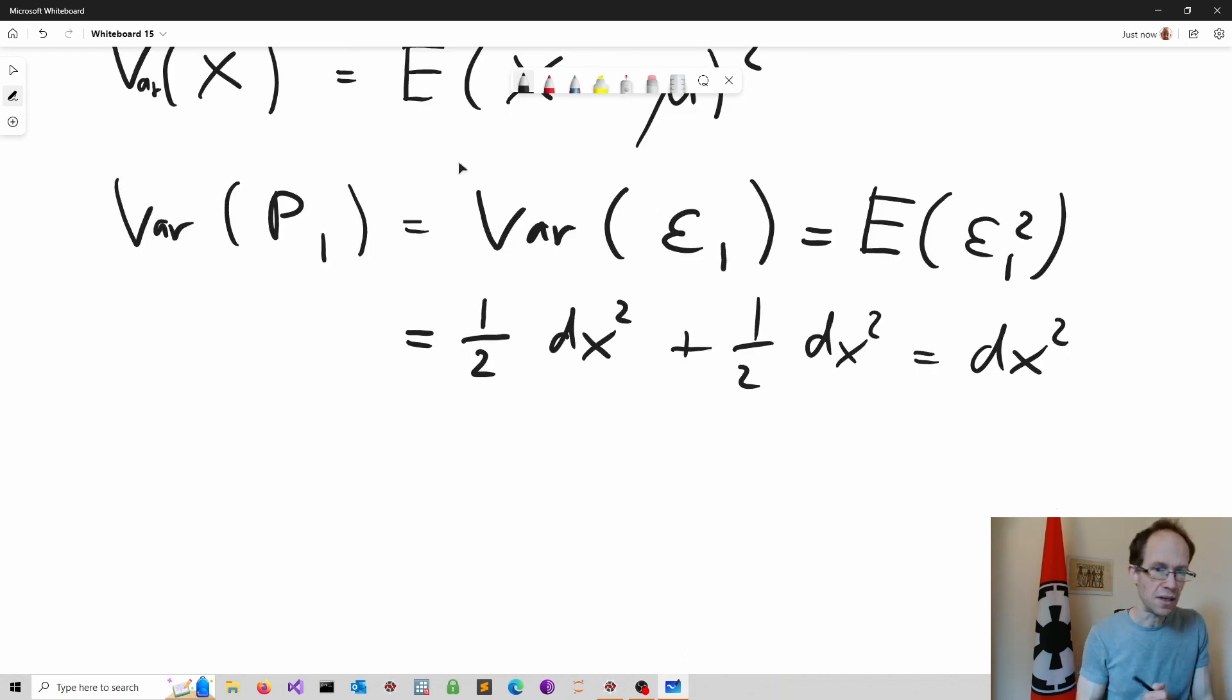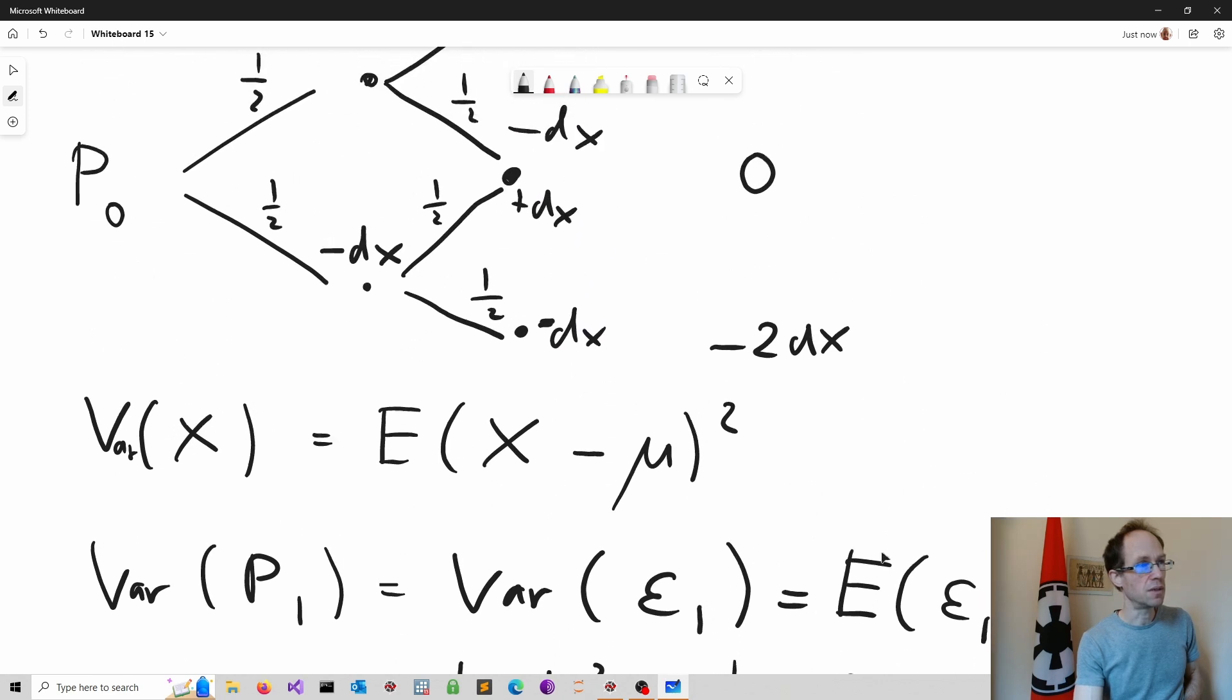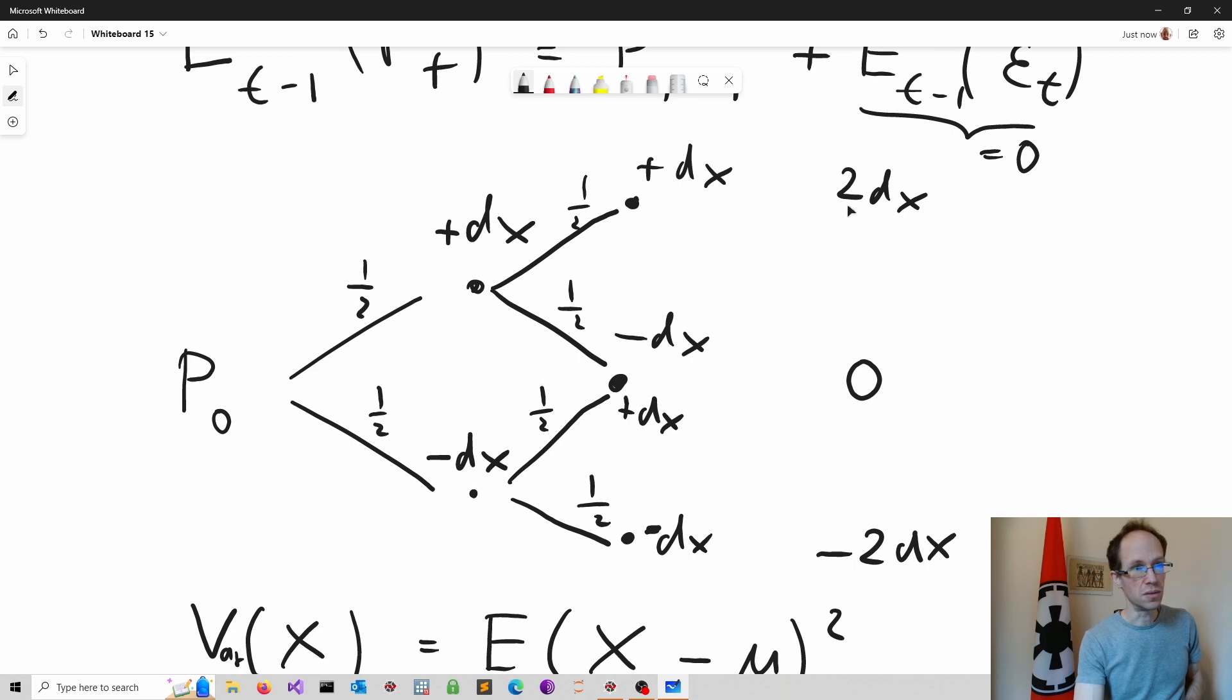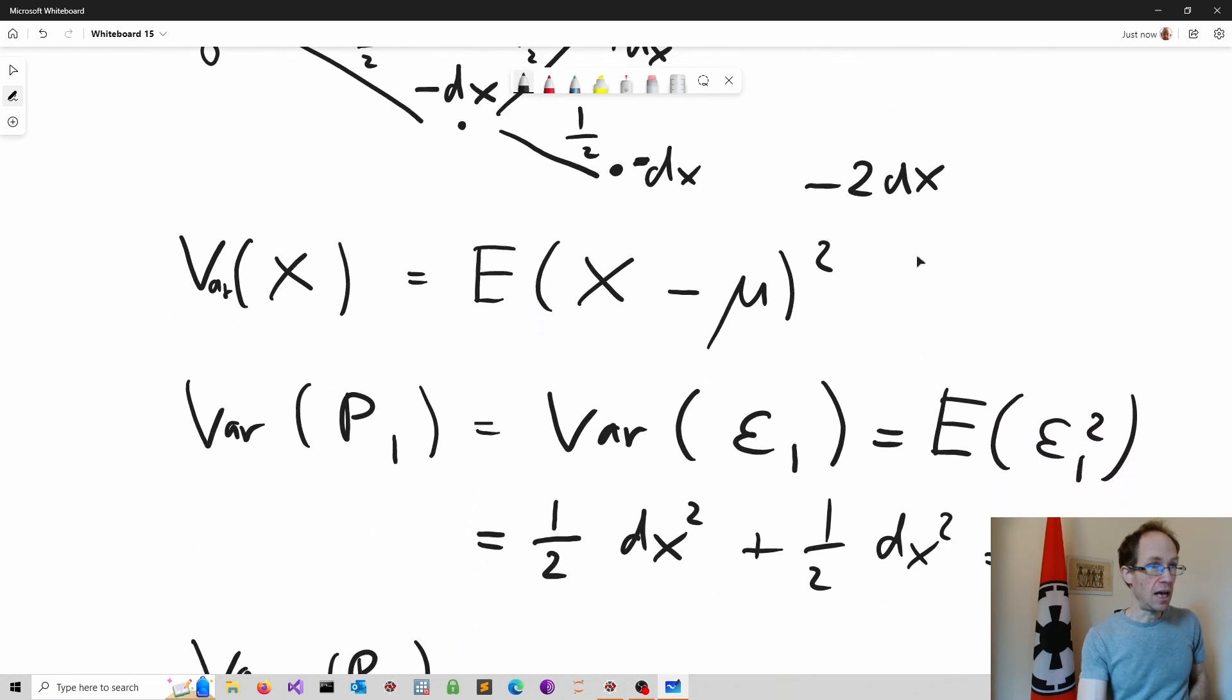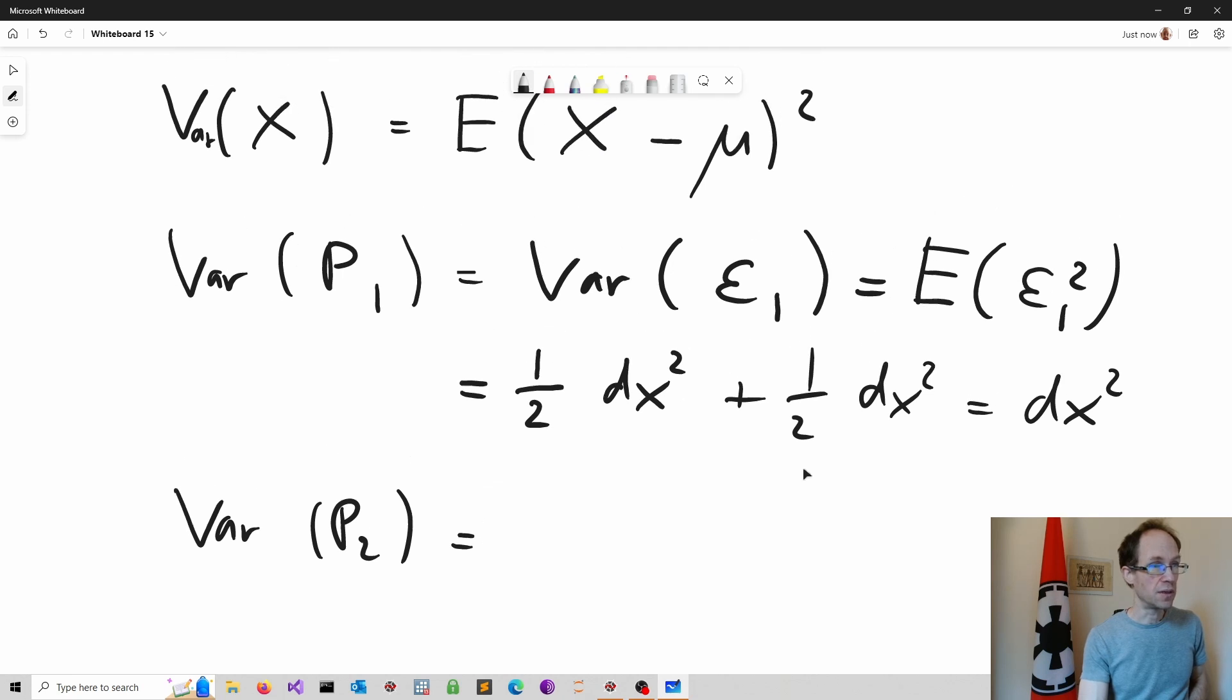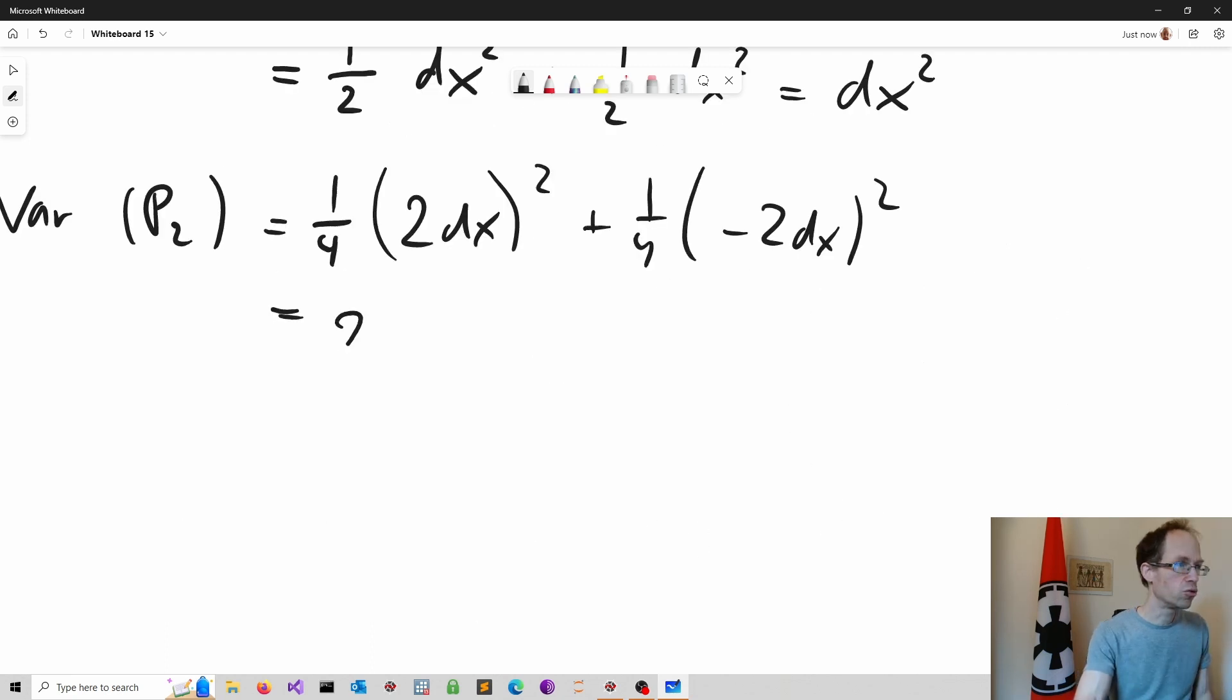Now of course we can continue our exercise. So again we start from 0 and we look at now the variance of the share price in two periods time. Now in this case we already know what the possible outcomes are. So either it goes up, up and we get 2 delta x, probability of it is 1 divided by 4. Or we get no movement, so we have a displacement of 0. Of course the expected value is also 0, so this term drops from our variance equation. Or we move down twice and we have a displacement of minus 2 dx, and again we have a probability of 1 divided by 4 for this to happen. So in the end we obtain 1 divided by 4, 2 dx power of 2, plus 1 divided by 4 minus 2 dx power of 2. And obviously this simplifies to 2 dx power of 2.